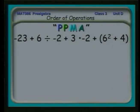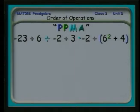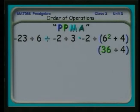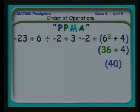The first thing I do is identify the different operations, and here I've color-coded them: brackets in blue, powers in a greenish color, multiplication and division in a lighter blue, and addition and subtraction in gray. Working inside the brackets, I see a power, so I do 6 squared, making that 36. Continuing inside the brackets, I have 36 plus 4 — addition is last — so what's in the brackets calculates to 40.